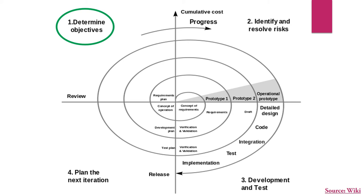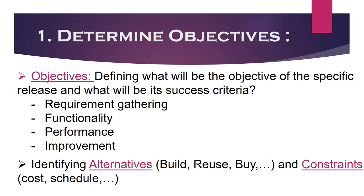In the spiral model, an iteration starts with a phase called determining the objective of the iteration. This phase consists of various preliminary activities like defining the problem, gathering requirements, and identifying the success criteria of the iteration. This phase is dedicated to planning for the particular iteration, and multiple decisions are taken by the team, like identifying alternatives and constraints.